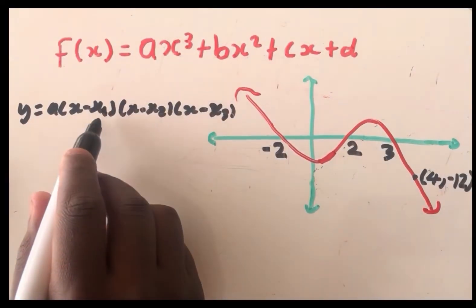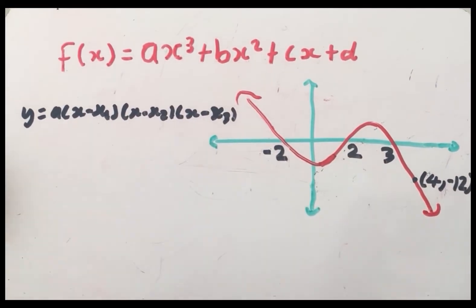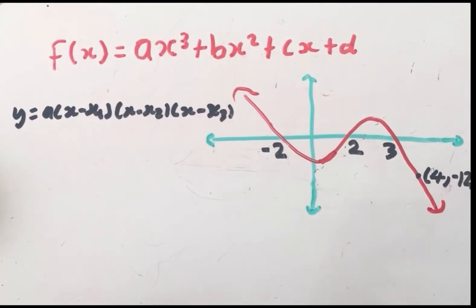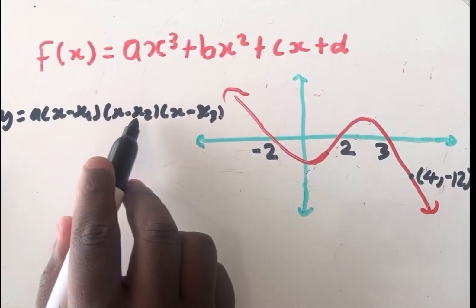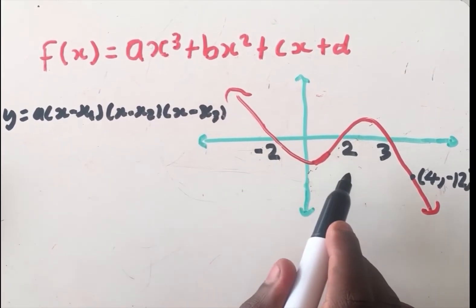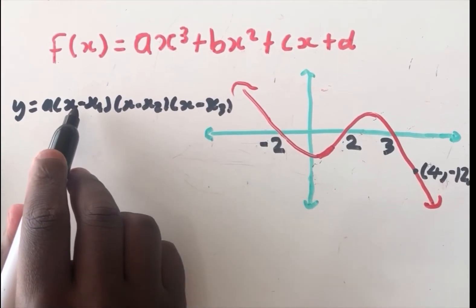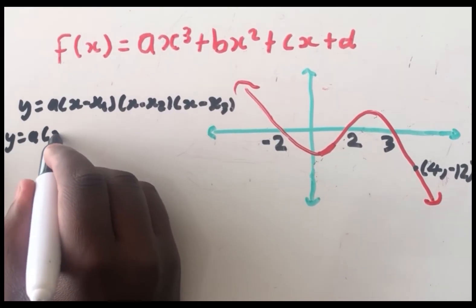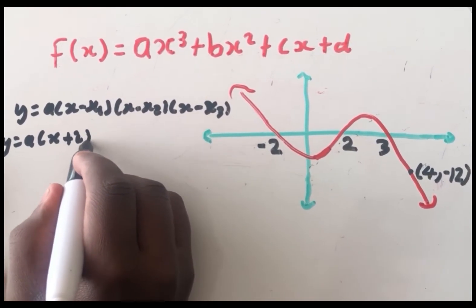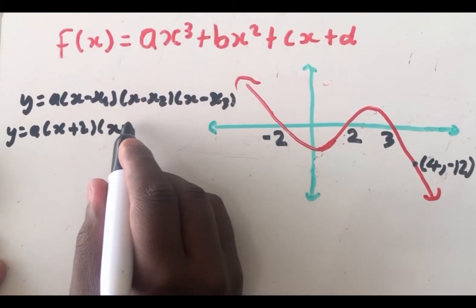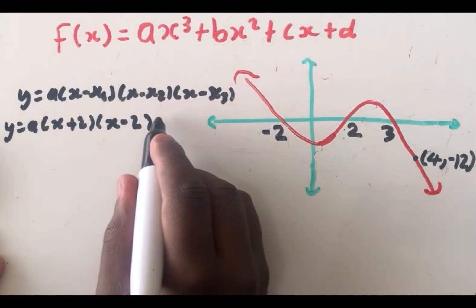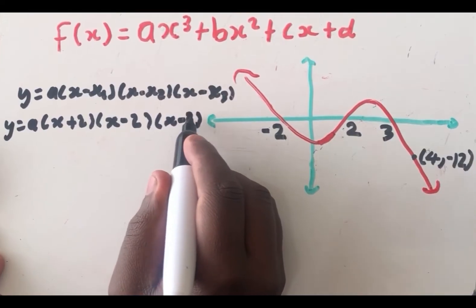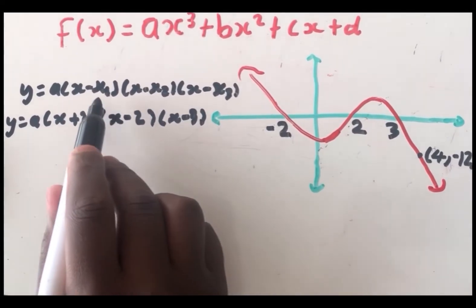Some students prefer writing r₁, r₂, r₃ — it's still the same equation, just in different notation. In place of x₁, x₂, and x₃, you substitute your x-intercepts. So when you substitute −2, because there is another minus, it's going to become a plus. Therefore, we're going to have y = a(x + 2)(x − 2)(x − 3). You strictly substitute your x-intercepts in place of x₁, x₂, x₃.